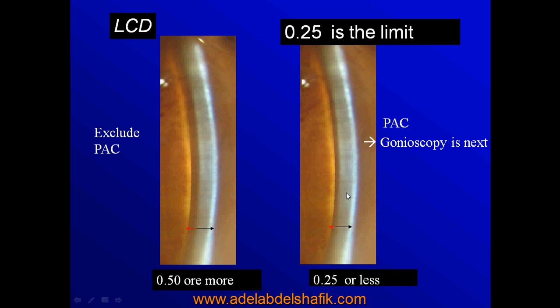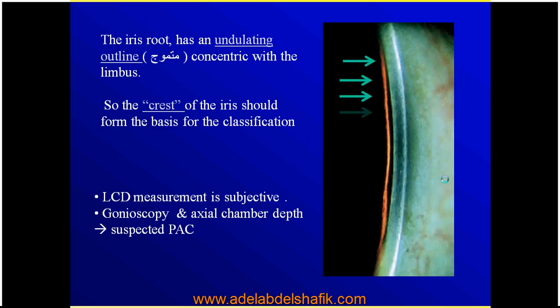Whenever the depth of the anterior chamber is one quarter or less of that of the peripheral cornea, gonioscopy should be done because the possibility of angle closure is there. We have to keep in mind that the surface of the iris is not flat — it has elevations and depressions — so we make our judgment at the narrowest part of the angle to compare the thickness of that narrow part with that of the cornea.